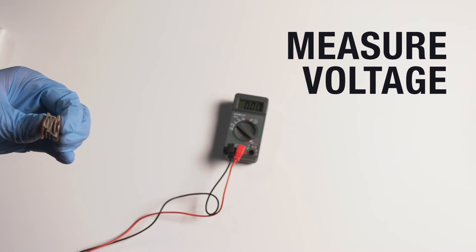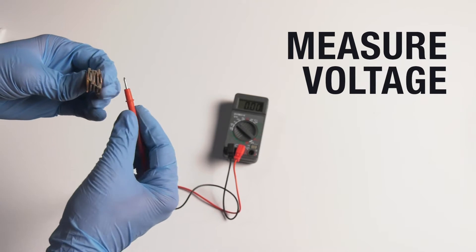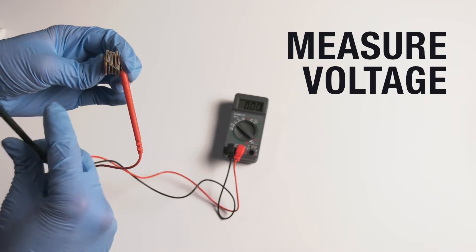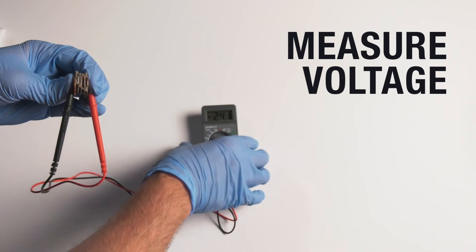To measure the battery's output, take the voltmeter and touch the leads to the top and bottom of the coin battery. Record the measurement.